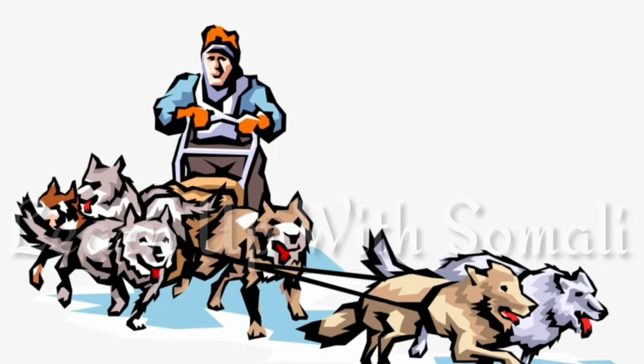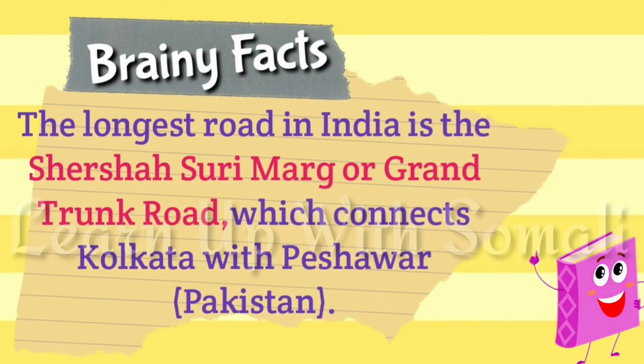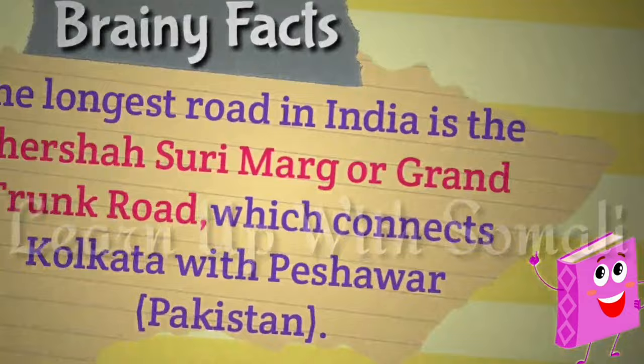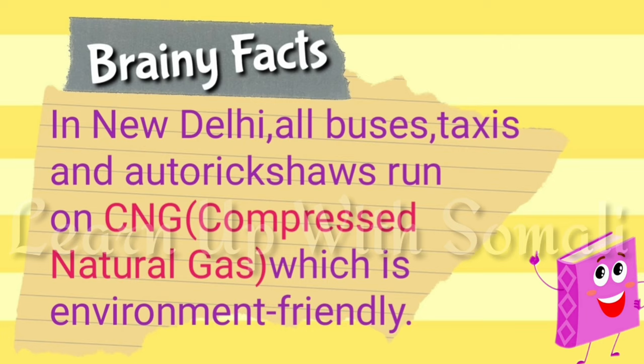Now, my dear kids, it's time for brainy facts! The longest road in India is the Sher Shah Suri Marg, or Grand Trunk Road, which connects Kolkata with Peshawar in Pakistan. In New Delhi, all buses, taxis, and auto rickshaws run on CNG — compressed natural gas — which is environment friendly.